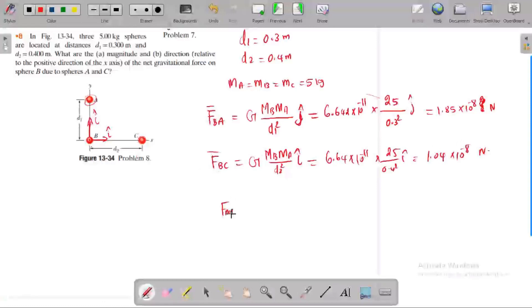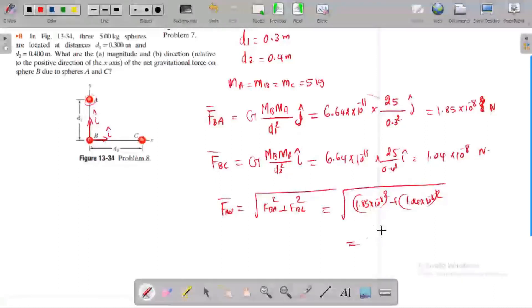Net gravitational force equals the square root of F_BA squared plus F_BC squared. The answer is 2.12 times 10^-8 Newtons.